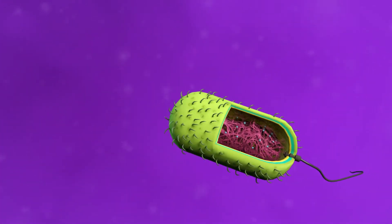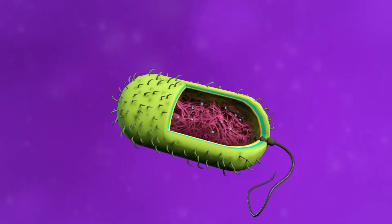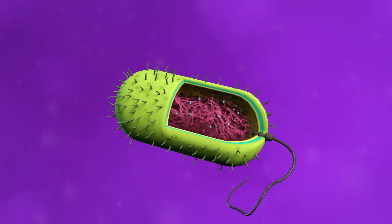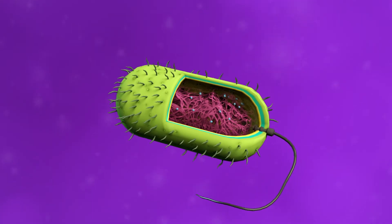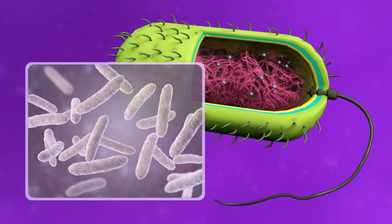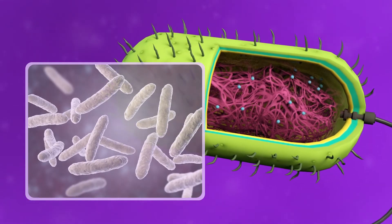The main characteristic of prokaryotic cells is that DNA, the genetic material, is floating in the cytoplasm instead of being stored in the nucleus. Bacteria are prokaryotic cells.